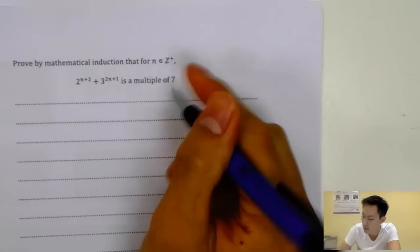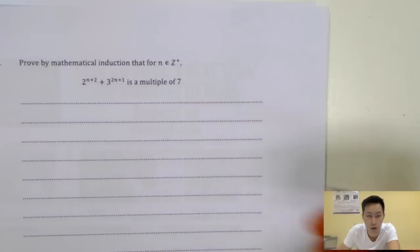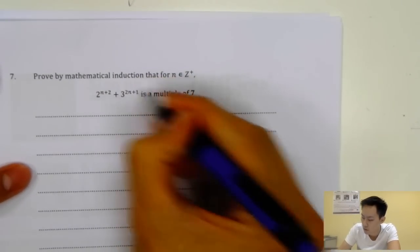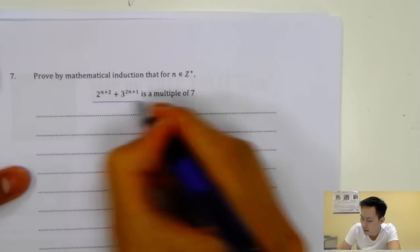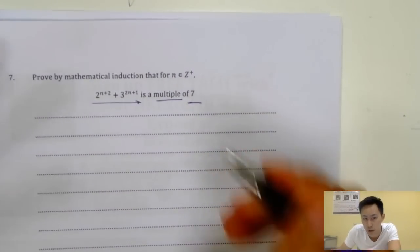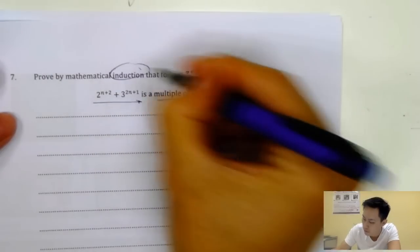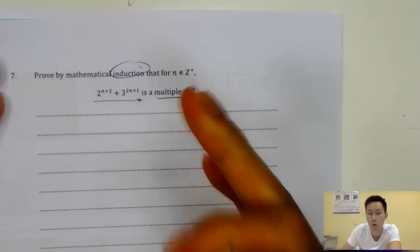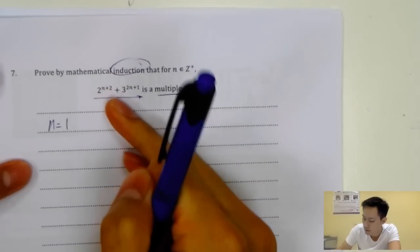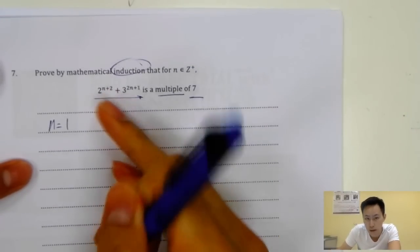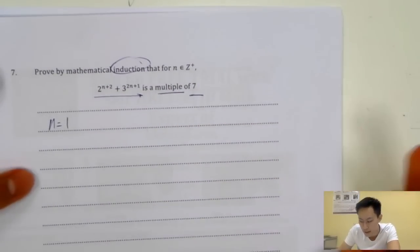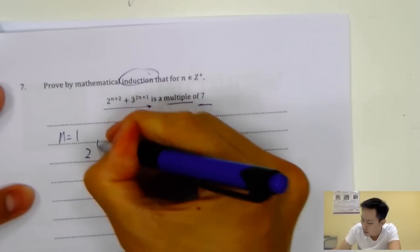The next question is a typical mathematical induction question. They'll ask you to show that an expression is a multiple of seven. You should remember: for induction, always three steps. Step one — sub in N equals one on the left-hand side. Is it divisible by seven?